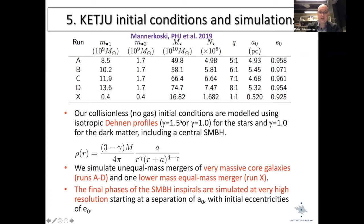We simulated the final phases of black hole inspiral at very high resolution — starting separations of about 5 parsecs for the massive binaries and 0.5 parsec for the lower-mass binary. Initial eccentricities are very high for all cases because they come from relatively radial merger orbits.